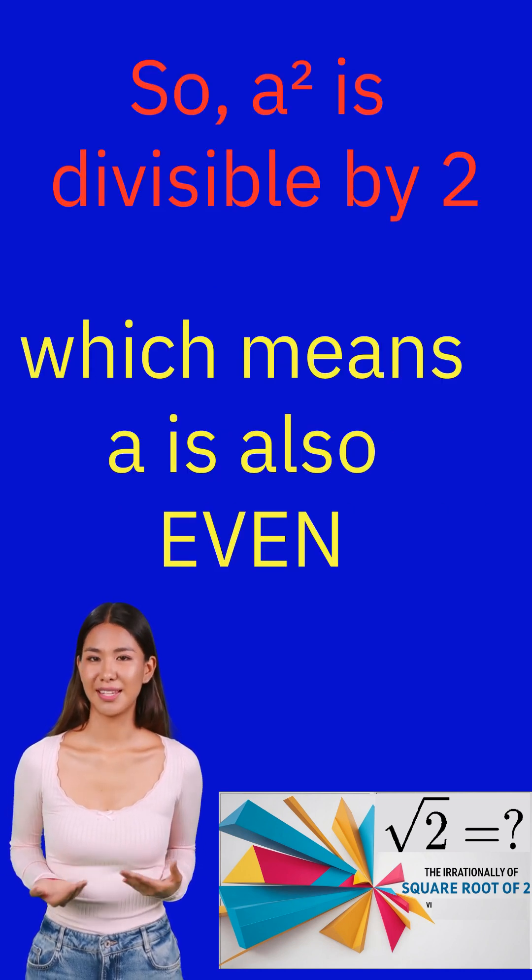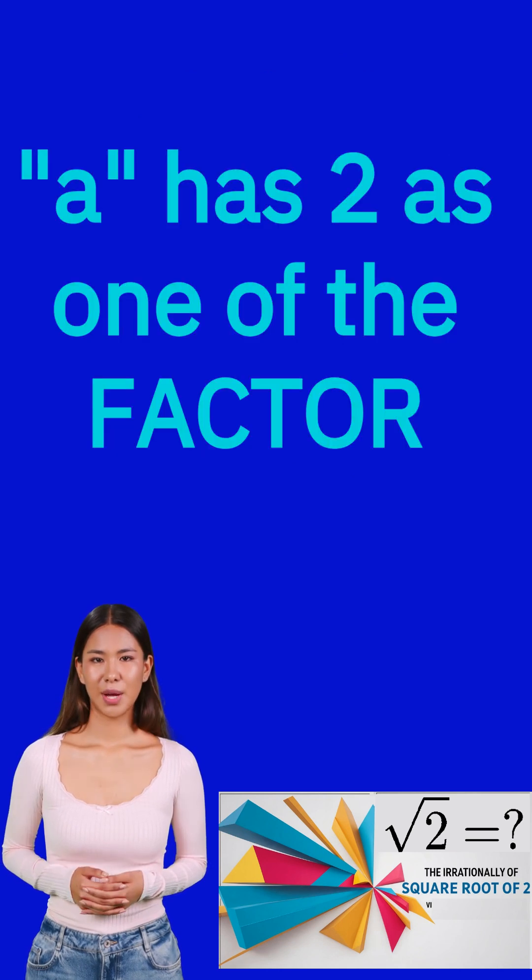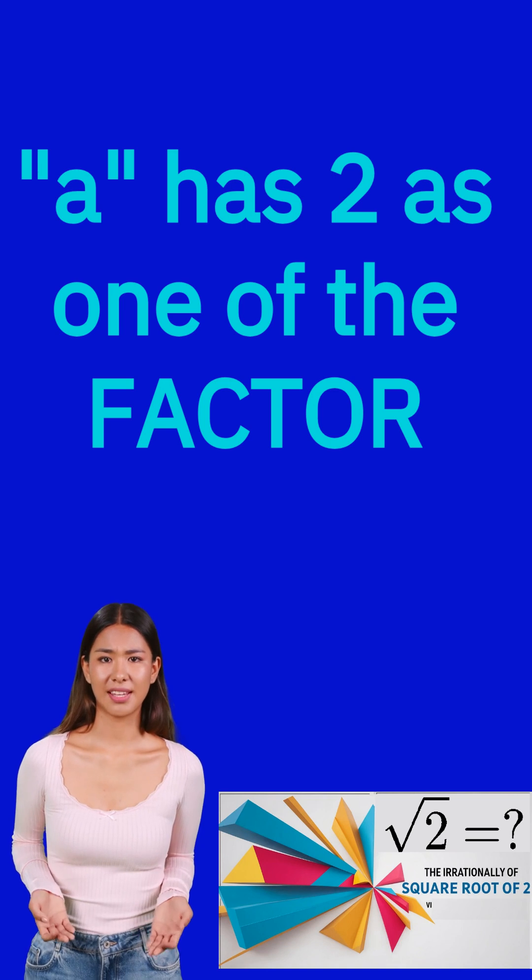Which means that a² and a both are even, and a has 2 as one of the factors. Now we know that a has 2 as one of the factors, let's see what about b.